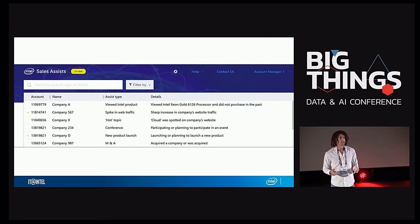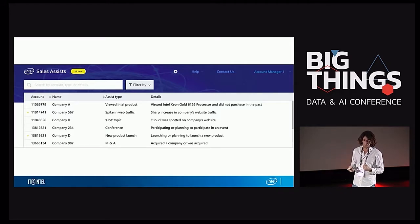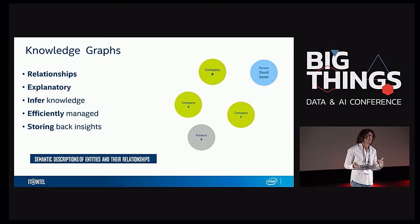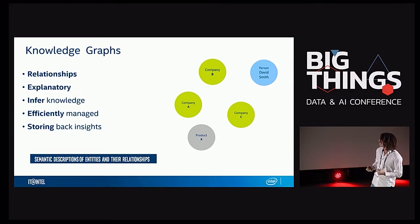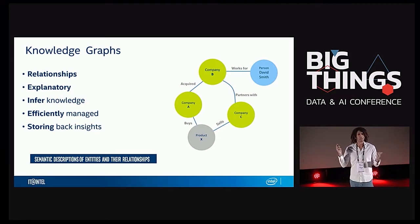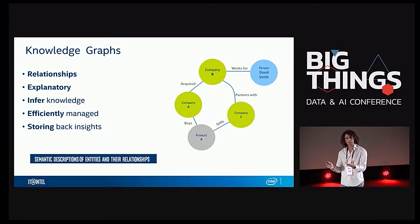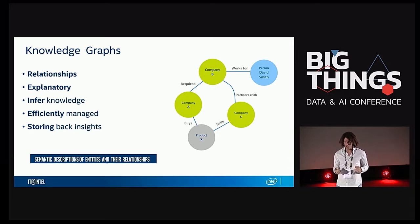So we decided to create a centric data source — a knowledge graph — that would unify all our external data, internal data, and new insights that we learned along the way. Why specifically a knowledge graph and not throw everything into a document DB? Knowledge graphs are a great way to represent relationships. They're very explanatory — you can give the motivations behind your recommendations and explain it in normal sentences. You can infer knowledge directly from the graph, run the same algorithm and quickly get new knowledge about a specific entity. Everything is efficiently managed — it's one hop, two hops, three hops away. And you can always store back the insights you just collected.